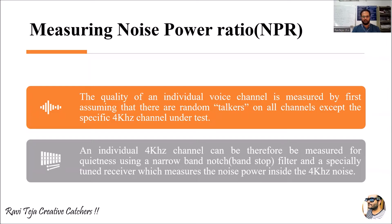To measure the noise power ratio, let's assume two things: talkers and quietness. The quality of an individual voice channel is measured by first assuming that there are random talkers. We consider several channels in the NPR concept. One channel of 4 kilohertz frequency is separately kept under test, while the remaining all channels are measured with respect to the quality of an individual voice channel assuming random talkers.